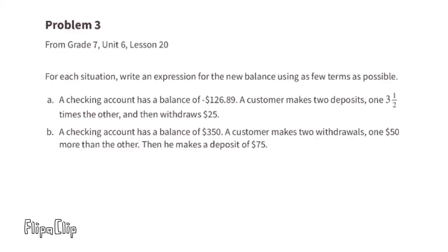Problem number 3 from 7th grade, Unit 6, Lesson 20. For each situation, write an expression for the new balance using as few terms as possible. A. A checking account has a balance of negative $126.89. A customer makes two deposits. One deposit was 3.5 times as large as the other, and then withdraws $25.